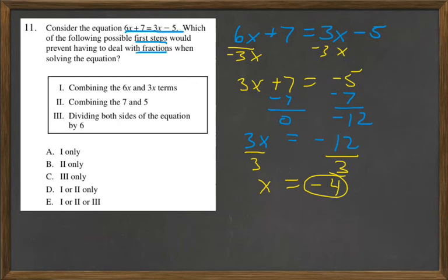Now the thing is, let's look at number 3. Dividing both sides of the equation by 6 as the first step. So let's write that again. 6x + 7 = 3x - 5. Well, without having to get too far into this,